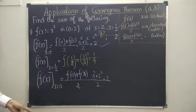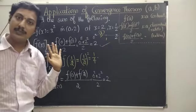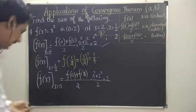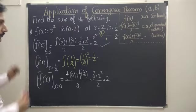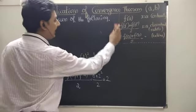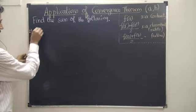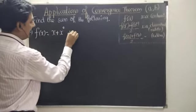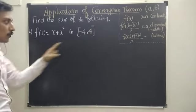So if the point is in the middle and it is a point of continuity, it is very simple. Suppose it is in the extreme side, let's see example number 2. In question number 2, suppose f of x is equal to x plus x squared in the interval minus 4 to 4. It is a closed interval.